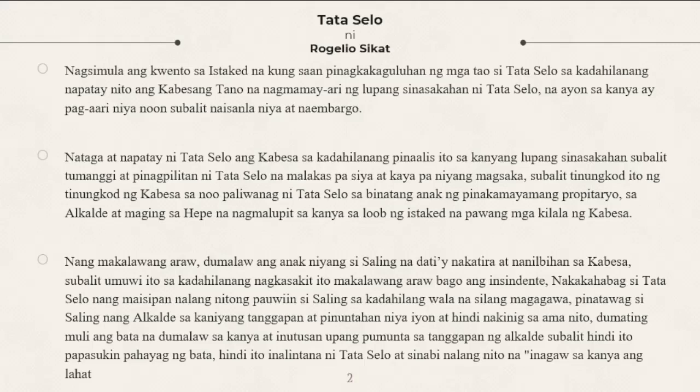Nagsimula ang kwento sa istaked na kung saan pinagkakaguluhan ng mga tao si Tataselo sa kadahilanang napatay nito ang Kabeza Tano — na nagmamayari ng lupang sinasakahan ni Tataselo, na ayon sa kanya ay pag-aari niya noon subalit naibenta at naembargo. Nataga at napatay ni Tataselo ang Kabeza. Kapag sinabi nating kabeza — head, chief — sa katayuang katulad ng chief of police, mga ganon.